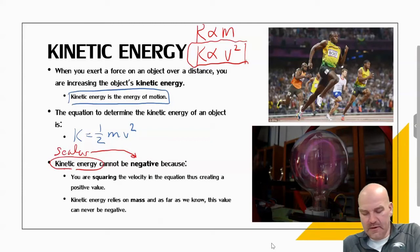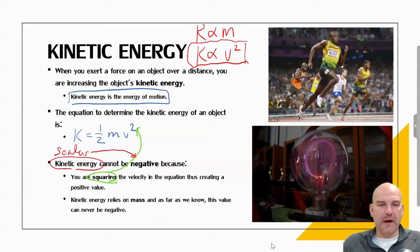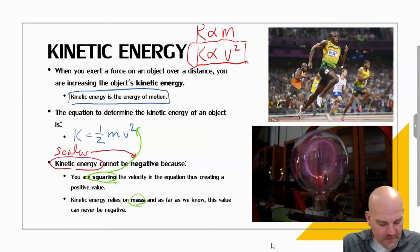There's two reasons why kinetic energy cannot be negative. The first is we're squaring the speed. So even if my velocity is negative, I'm squaring this, which makes it positive.